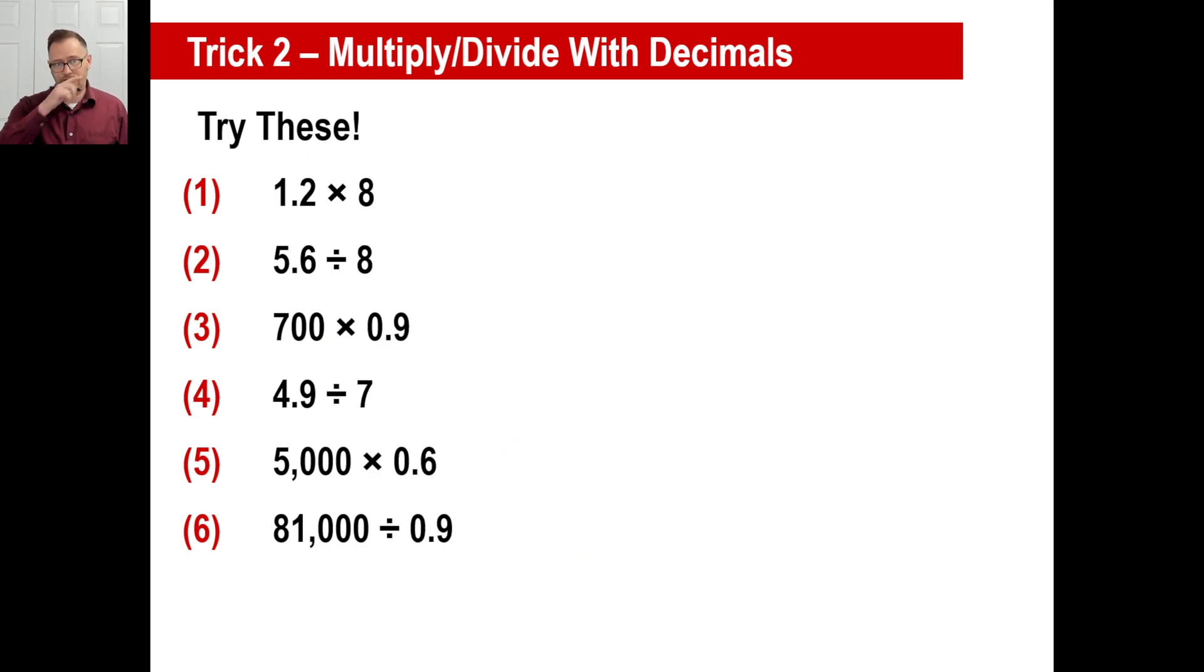Pause it and try these six. Let's see. Estimate. 1 times 8 is 8. The problem actually turns into 12 times 8, which is 96. Closest thing to 8: 9.6. This is about 6 divided by 8, which is about 1. So, ignoring this, 56 divided by 8 is 7. About 1 will be 0.7. This is going to be 700 times 1-ish. So 700 is our estimate. But you say 7 times 9 is 63. What's closest to 700? That.